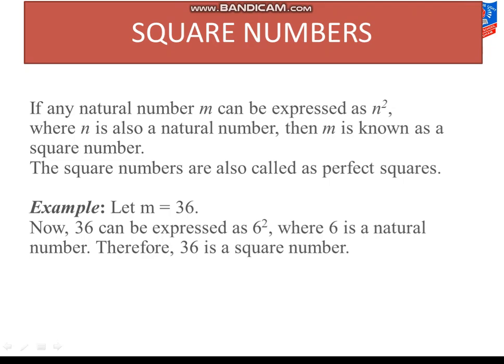Basically, square numbers, it is multiplying a number by itself. Means 2 into 2, 4. Multiplying 2 by 2. 3 into 3, 9. So 3 into 3 is 9, and 9 is known as perfect square. Like 7 into 7, 49, and 49 is also known as perfect squares. So these are actually square numbers in which we multiply a number by itself.